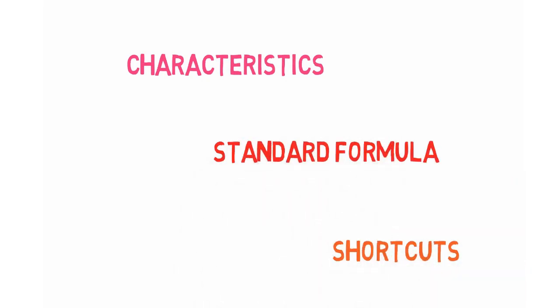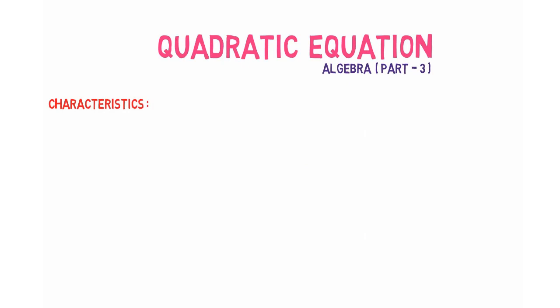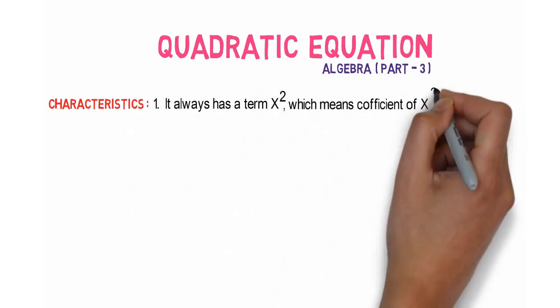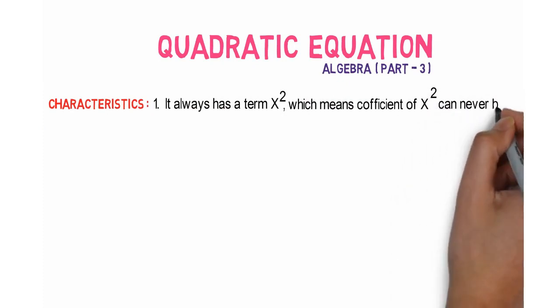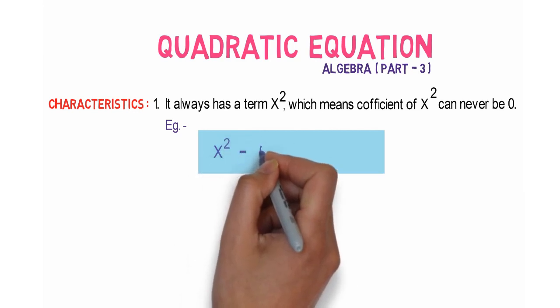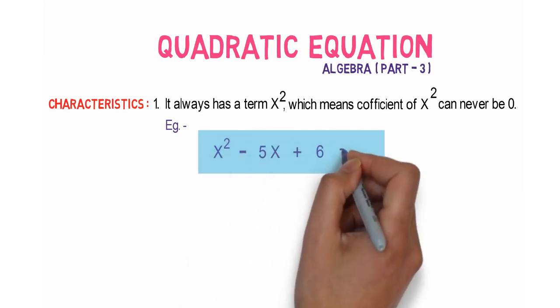The first characteristic is it always has a term called x², which means the coefficient of x² can never be 0. For example, x² - 5x + 6 = 0. Here we have a term called x², so this is a quadratic equation.